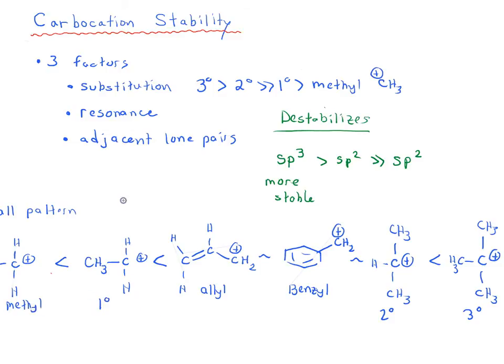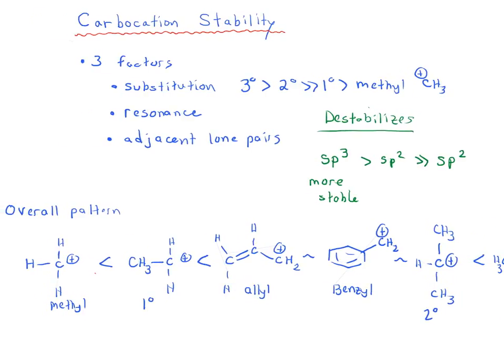Now there's two other things that should be put in here as well, and this is very important. As I mentioned earlier, SP2 is very unstable if it cannot be resonance stabilized. So for this reason, a carbocation that's directly on a double bond, we call this vinyl, it's very unstable. It's about as stable as a primary carbocation. So considerably less stable than allyl. There is no resonance.